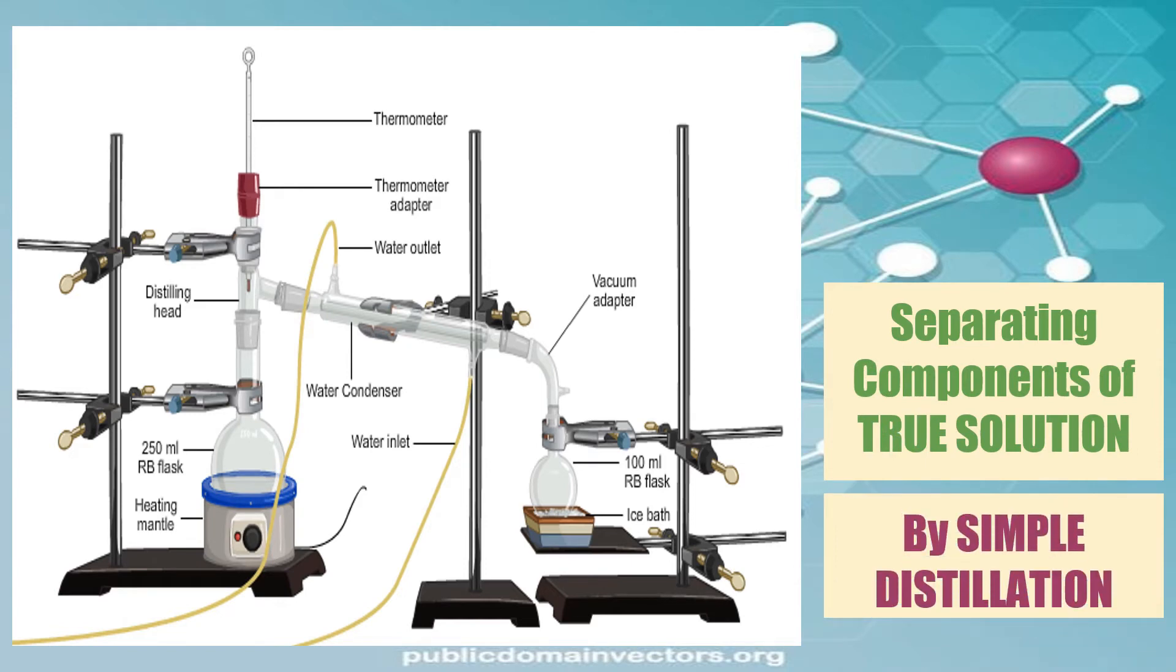In this setup, the mixture is placed inside the 250 RB flask and it will be heated using a heating mantle. The temperature is set depending on the boiling point of the liquid we want to recover. Once the liquid boils, it will evaporate and pass a condenser. The condensing liquid will then be collected in another RB flask.